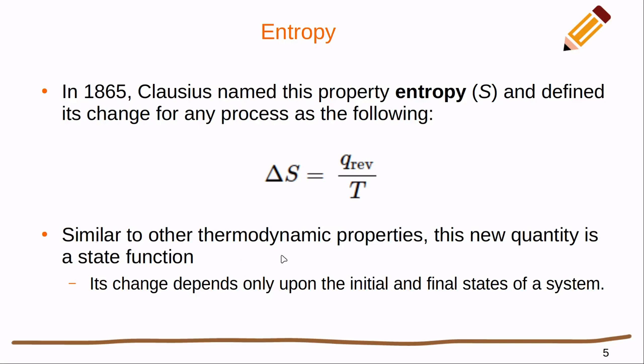This is similar to other thermodynamic properties in that it is a state function. This means that it doesn't matter what the path it takes is. Delta S is only going to depend on the initial state of the system and the final state of the system. Even if the system goes through many different paths to get to that first state and that final state, its change in entropy is going to remain the same.